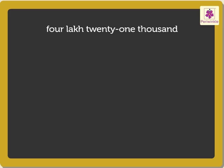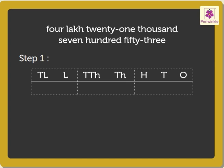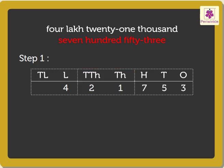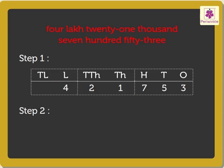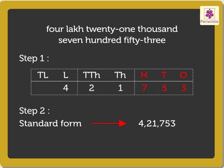Let us write the number 4,21,753 in the standard form. Step 1: Write the number in the place value chart as 4 lakh in the lakhs period, 21,000 in the thousands period, and 753 in the ones period. Step 2: Now write the number in the standard form using commas to separate the periods as 4,21,753.